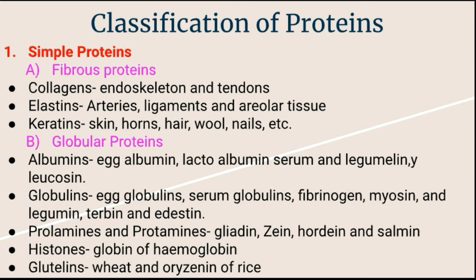Simple proteins occur naturally and yield only alpha amino acids. On the basis of their coagulation by heat and solubility, they are further classified into two subtypes: fibrous protein and globular protein.